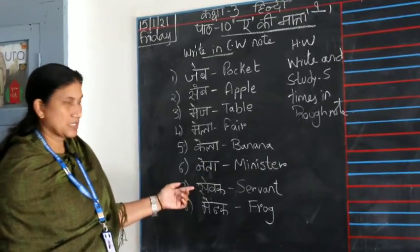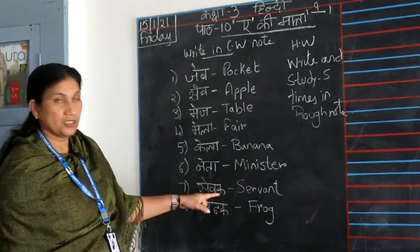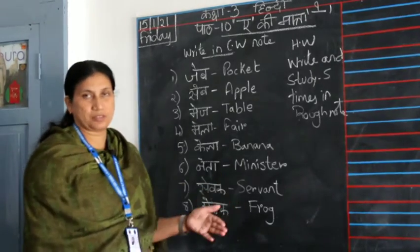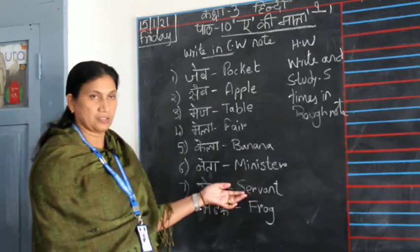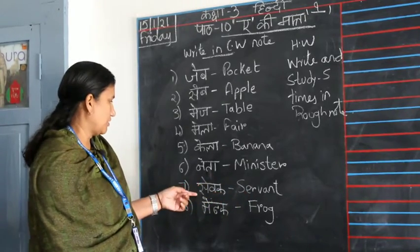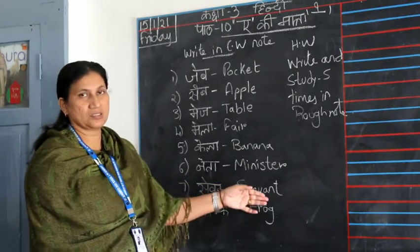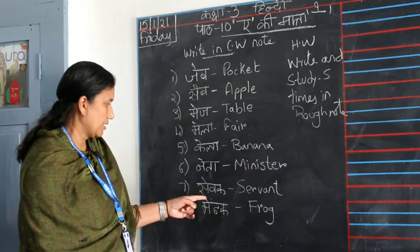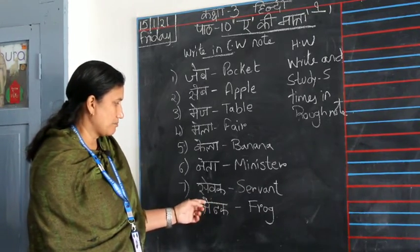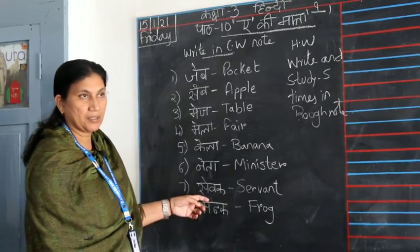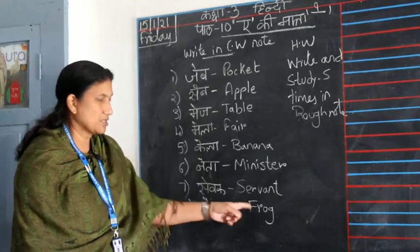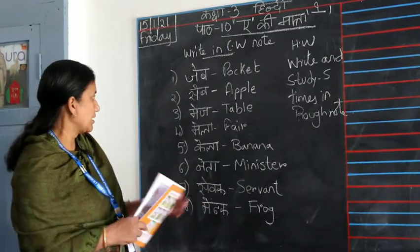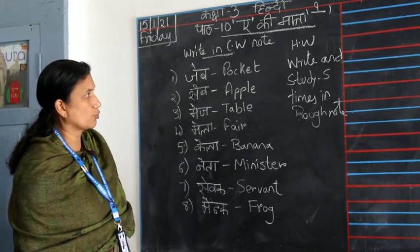Then 'Sevak.' Sevak means a person who helps you, like a servant — a person who does some work. Next one is 'Menduk.' M-E-N-D-U-K. Menduk means a frog.